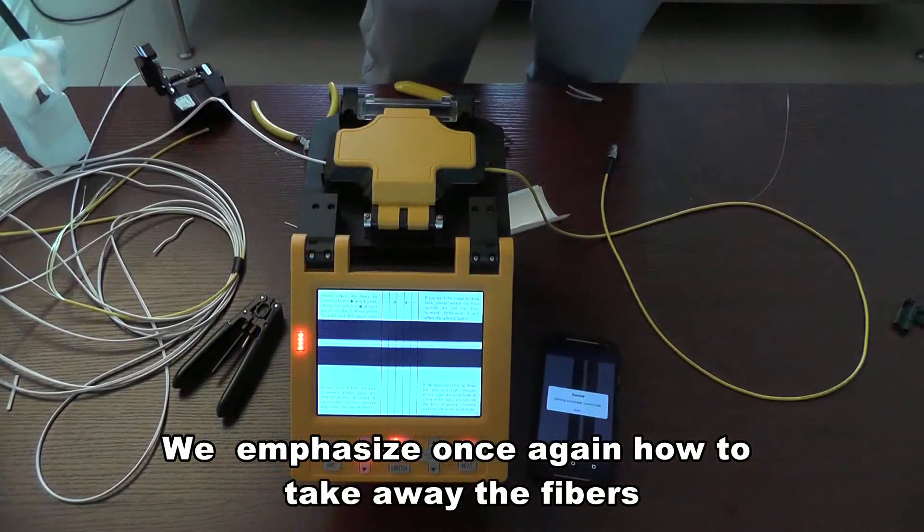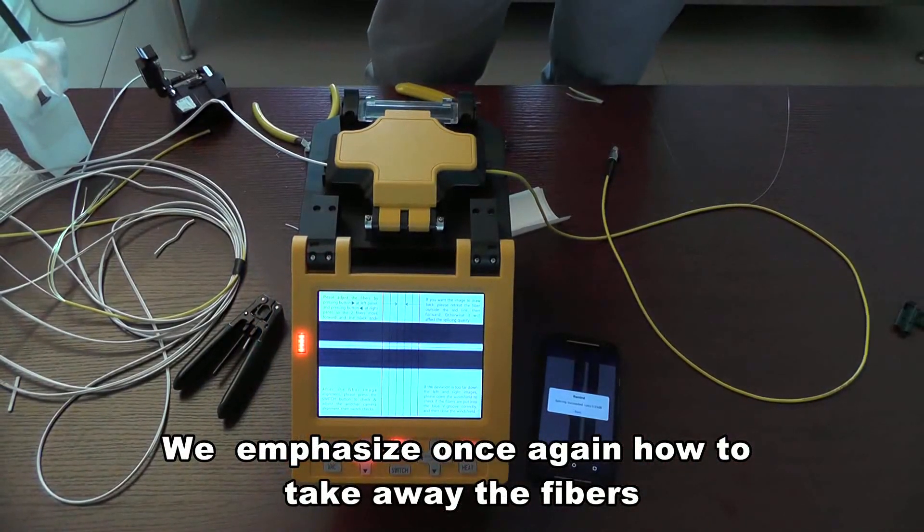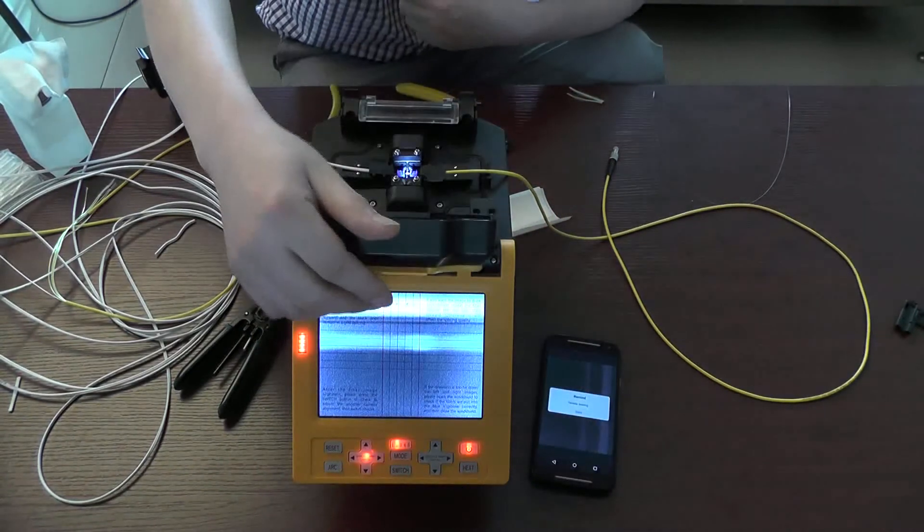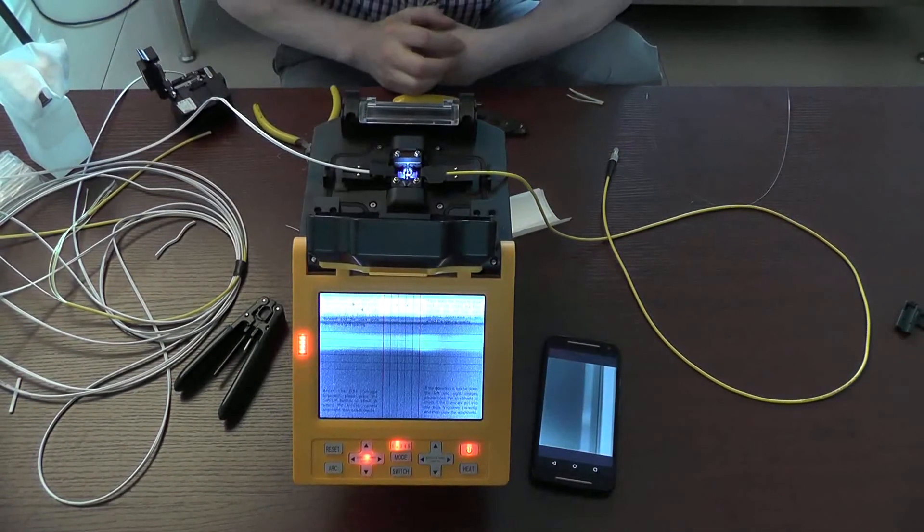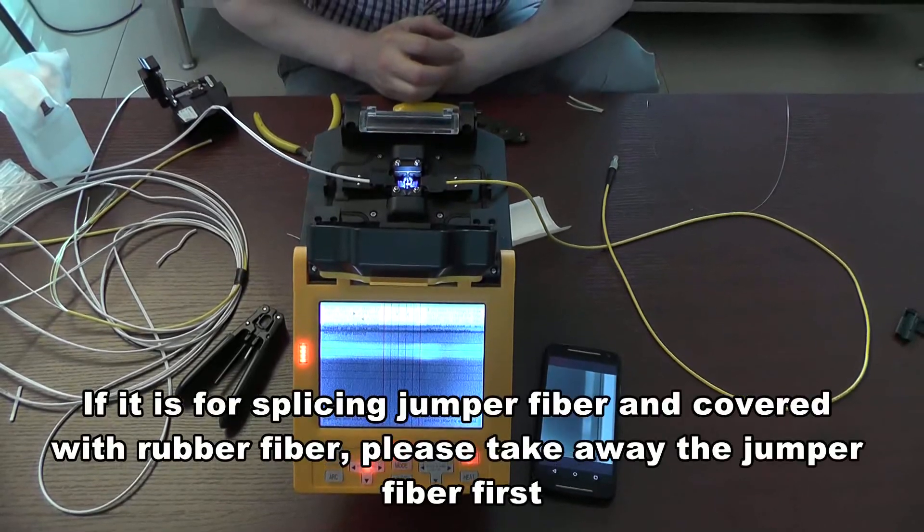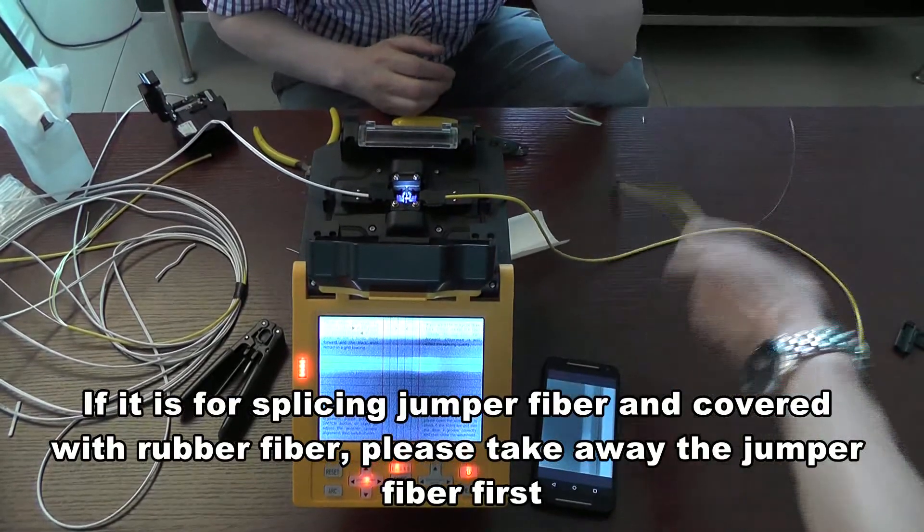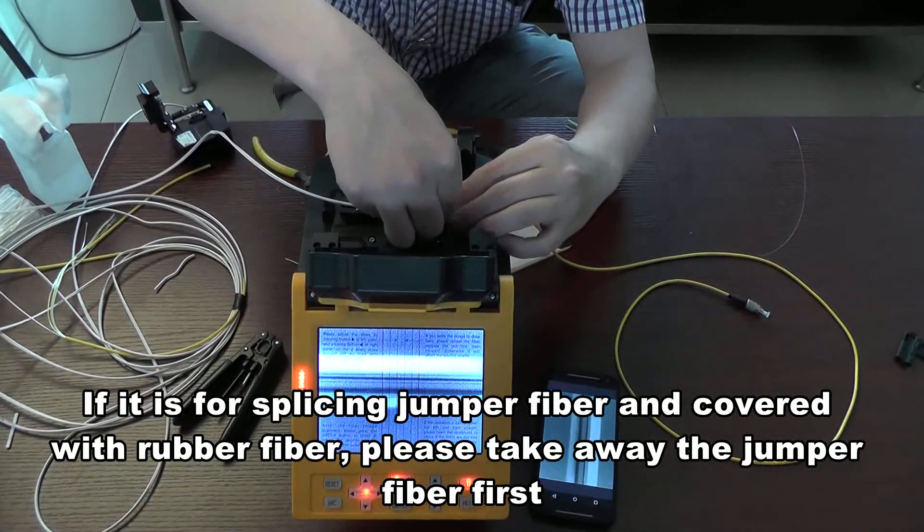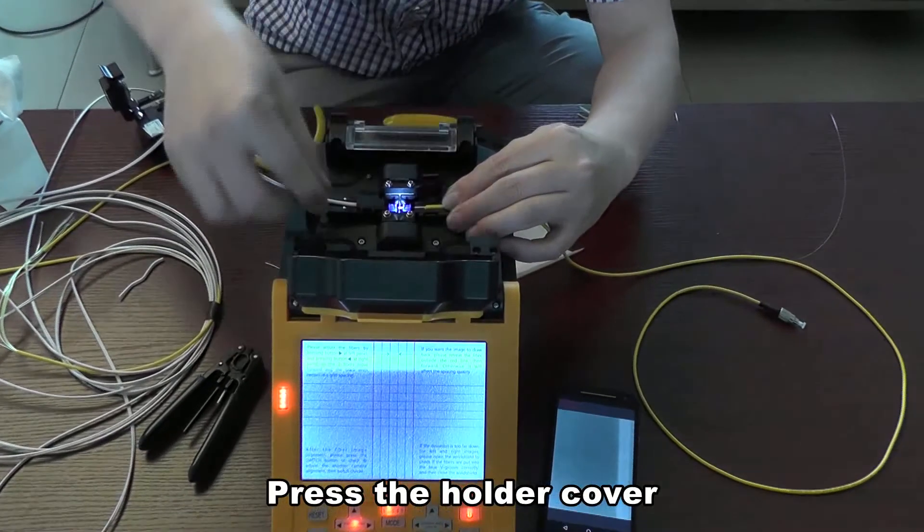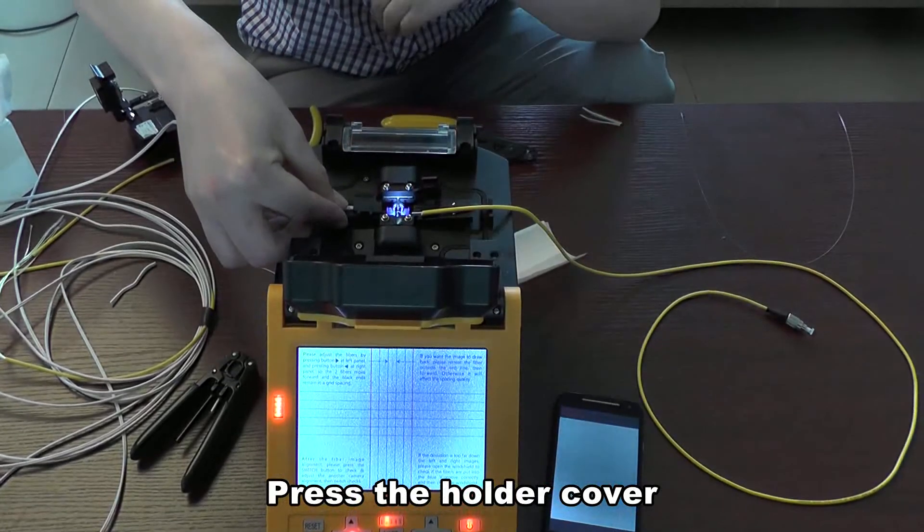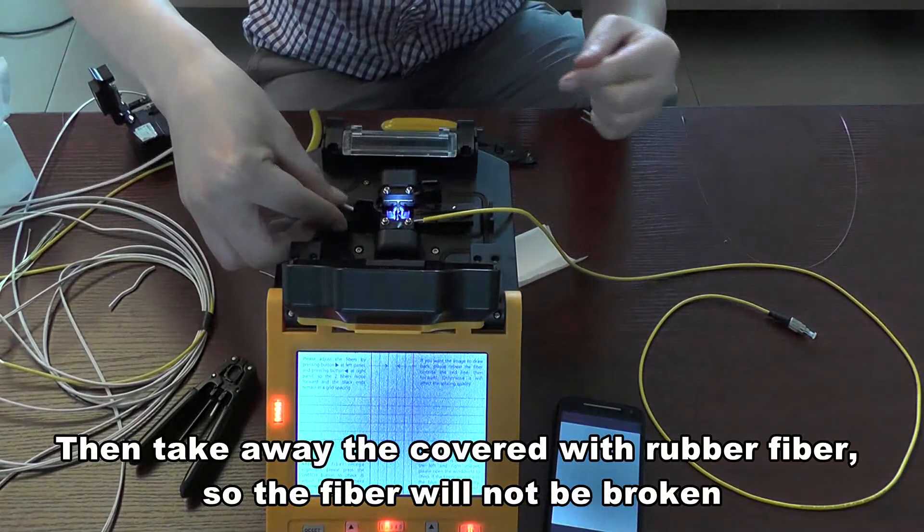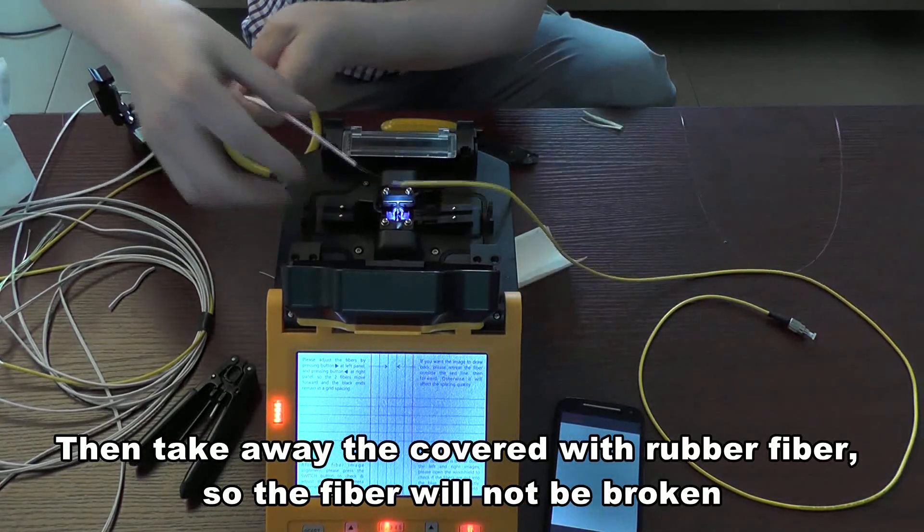We emphasize once again how to take away the fibers. If it is for splicing jumper fiber and covered with rubber fiber, please take away the jumper fiber first. Press the holder cover. Then take away the covered with rubber fiber so the fiber will not be broken.